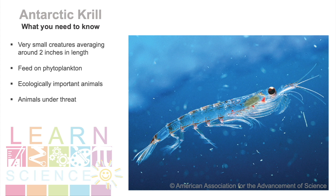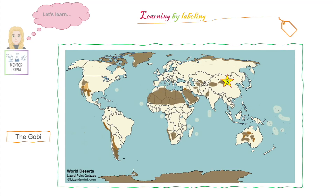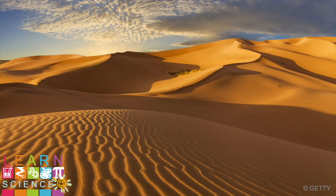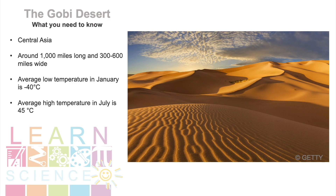These creatures are increasingly under threat from things like overfishing and climate change. A reduction in the Antarctic krill population will have serious knock-on impact on the rest of the Antarctic ecosystem. Now we know about the Sahara and Antarctica, let's move on to location 3, which must be the Gobi Desert. The Gobi Desert, located in Central Asia, is around 1000 miles long and 300 to 600 miles wide, which is massive. It can be both very cold and very hot — in January its average low temperature is minus 40 degrees, and in July its average high temperature is 45 degrees.